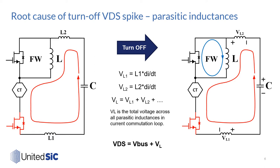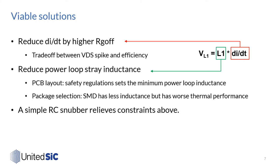The L·dI/dt equation gives hints for viable solutions. For a given design, the first solution would be reducing dI/dt. It is common to use high RG to slow down dI/dt and dV/dt. However, this method forces a trade-off between efficiency and EMI — using high RG dramatically increases switching loss. Another viable solution is to reduce power loop inductance, requiring PCB layout redesign and use of smaller, less inductive packages. However, there is a limit to minimizing power loop area on PCB due to safety regulations on minimum spacing and clearance. Also, smaller packages sacrifice thermal performance. So, is there a better solution? We think snubber is the answer.